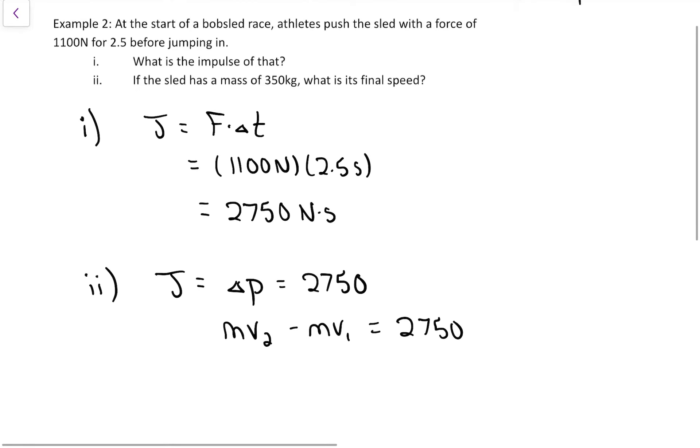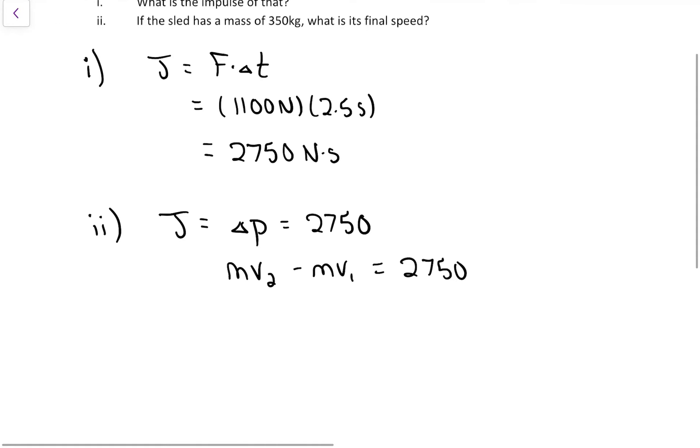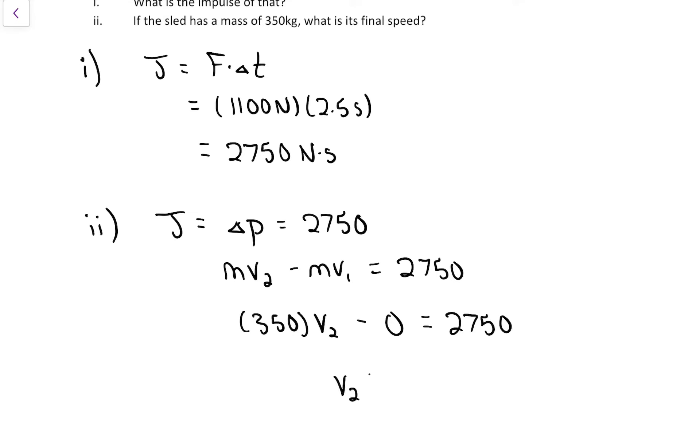The way this one's worded, it started from rest and got pushed to some final speed. So this one is 350 for the mass. I don't know how fast it got to, but it started from rest, so it was 0 for the initial momentum equals 2750. Dividing by 350, we get a final speed of, within rounding, 7.9 meters per second.